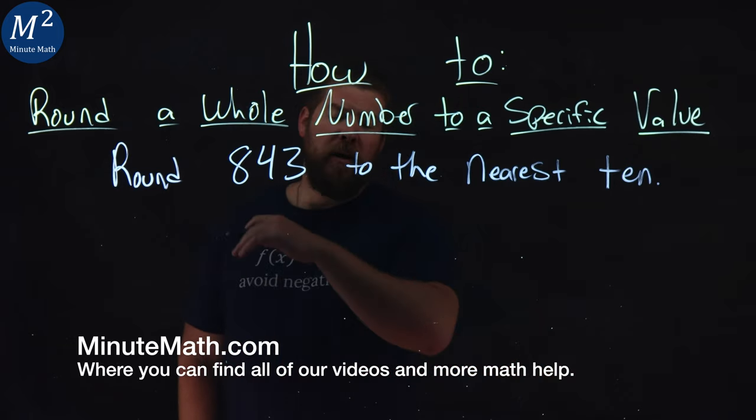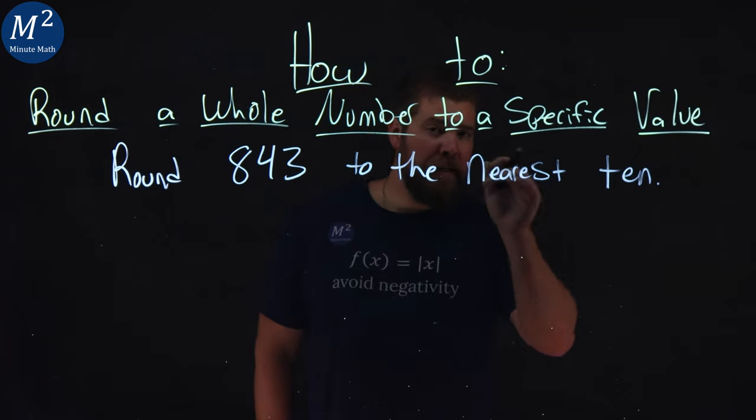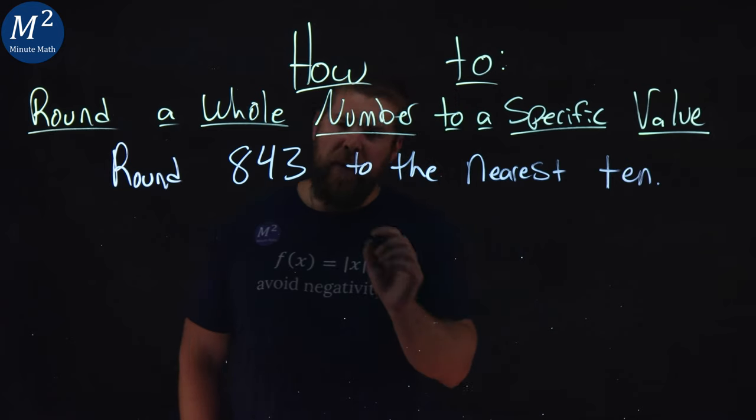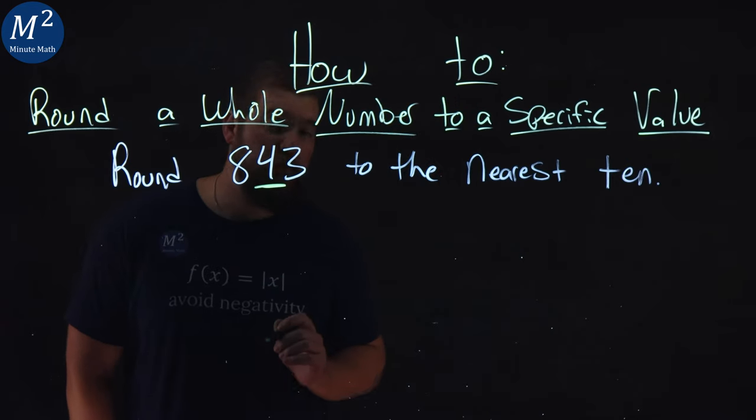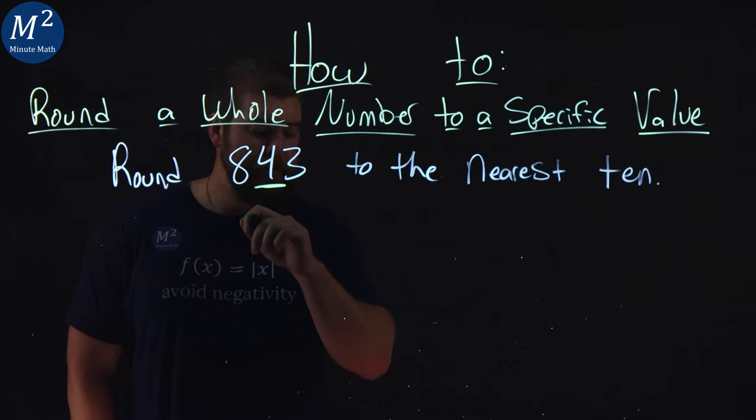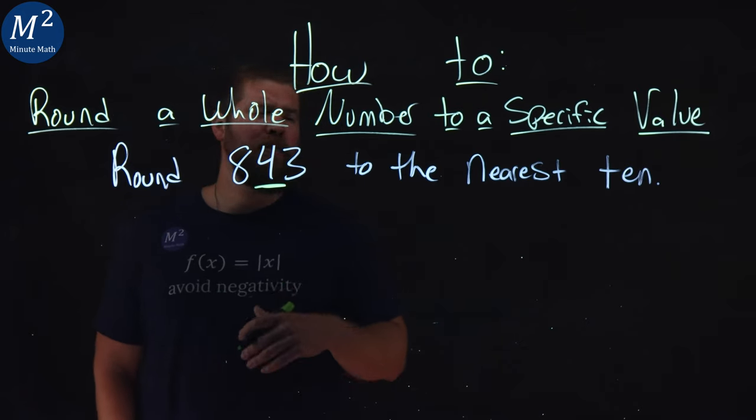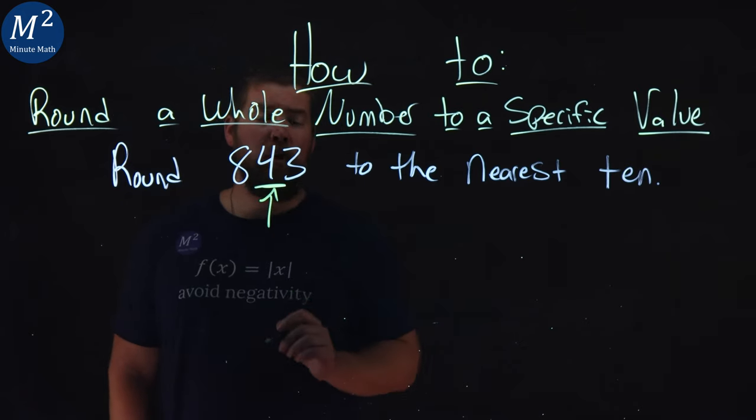I'd look at the number 843 and I need to find the tens place. And that's going to be right here where the 4 is. It's one past the ones, it's the tens. So this is our place value.